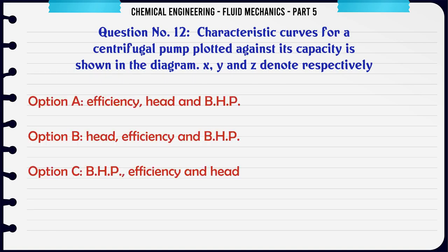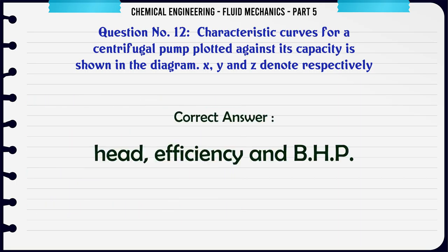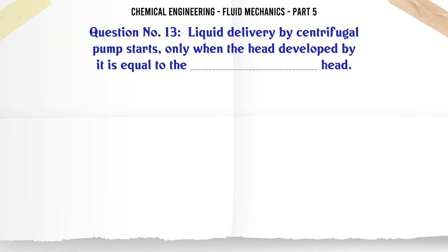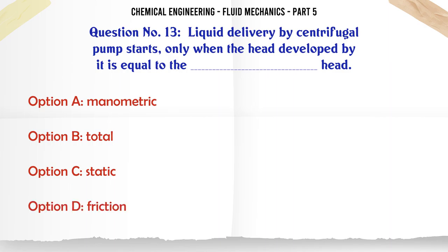Characteristic curves for a centrifugal pump plotted against its capacity are shown in the diagram. X, Y, and Z denote respectively: a) efficiency, head, and b.h.p., b) head, efficiency, and b.h.p., c) b.h.p., efficiency, and head, d) efficiency, b.h.p., and head. The correct answer is head, efficiency, and b.h.p.